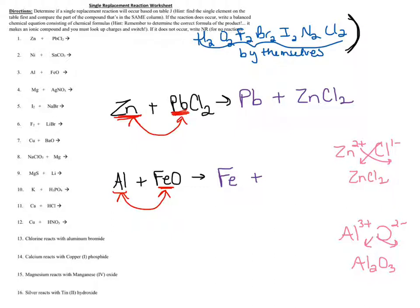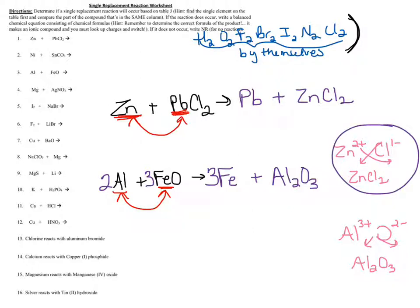I'm switching places of the two things I compared from the reference table — they switch places, not combine. Al was by itself, now it's switched with Fe. Fe is now by itself; it's not diatomic, so I write just Fe. Al is now combining with oxygen. I can't just write AlO — I need to look up the charges: Al has a 3+ charge, oxygen has a 2- charge. When I flip them, I get Al2O3. Now I balance: three oxygens on the right means three on the left; three irons and two aluminums follow accordingly. When making a new compound, look up charges and flip them — only consider diatomic when an element is by itself.